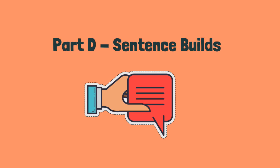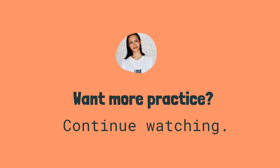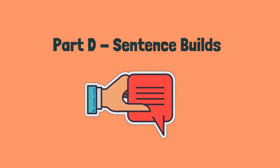Item 10: 'alive, to be, he's lucky.' Answer: He's lucky to be alive. Want more practice? Continue watching. Item 11: 'was done over, his shop, by a street gang.' Answer: His shop was done over by a street gang.